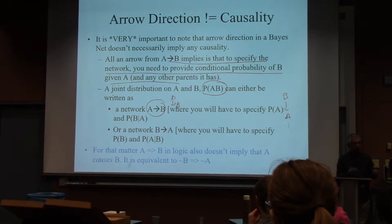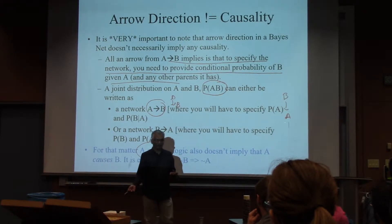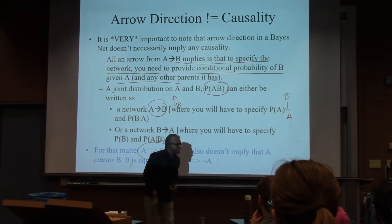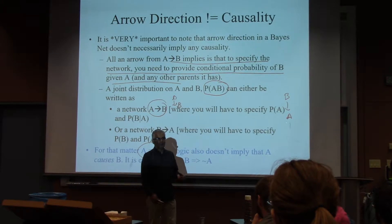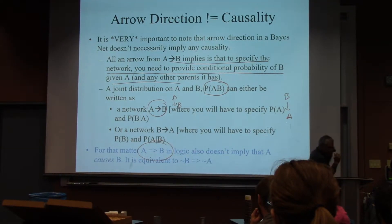It's very important to understand what arrows mean and what they do. For that matter, implication in logic also doesn't mean causation. A implies B is nothing but not-A or B. It's not causation at all. We just kind of overload the semantics and say implication must be causation. In fact, the theory of causation is actually a different branch altogether.